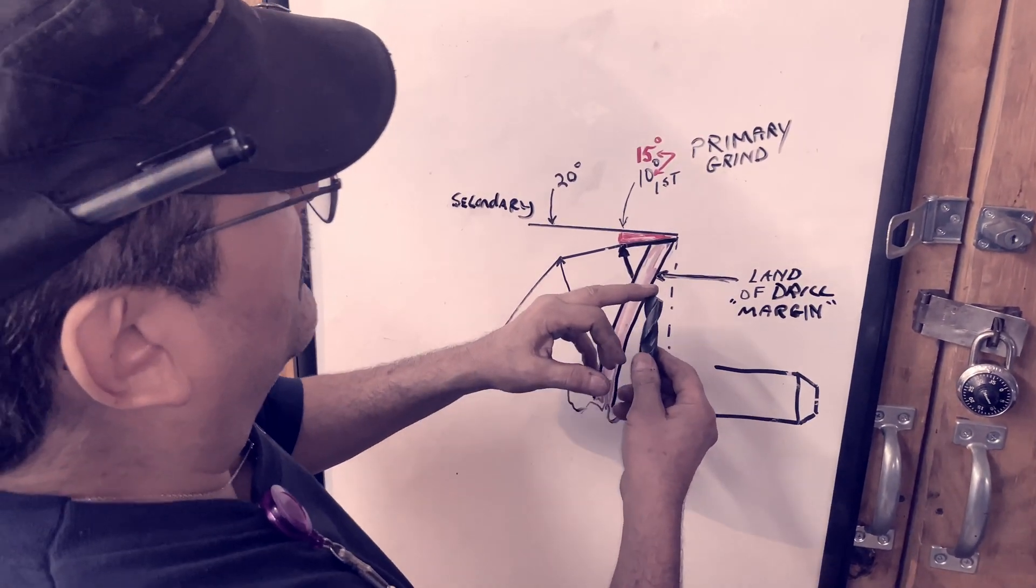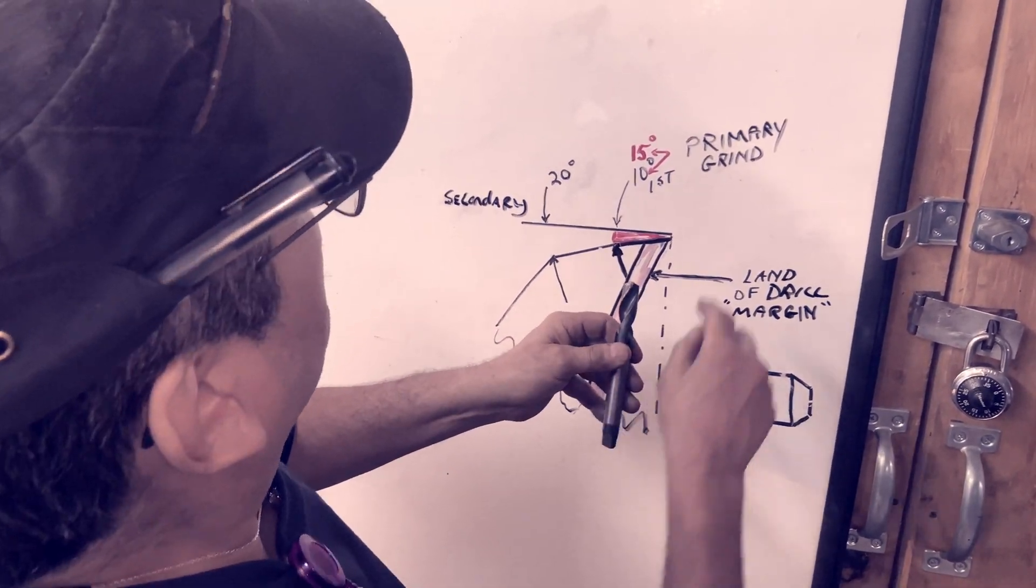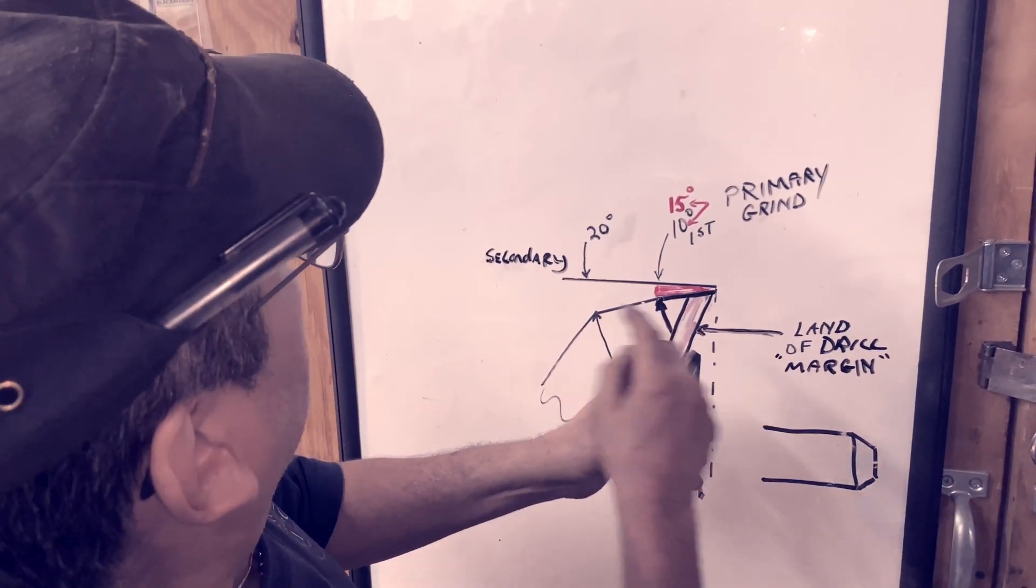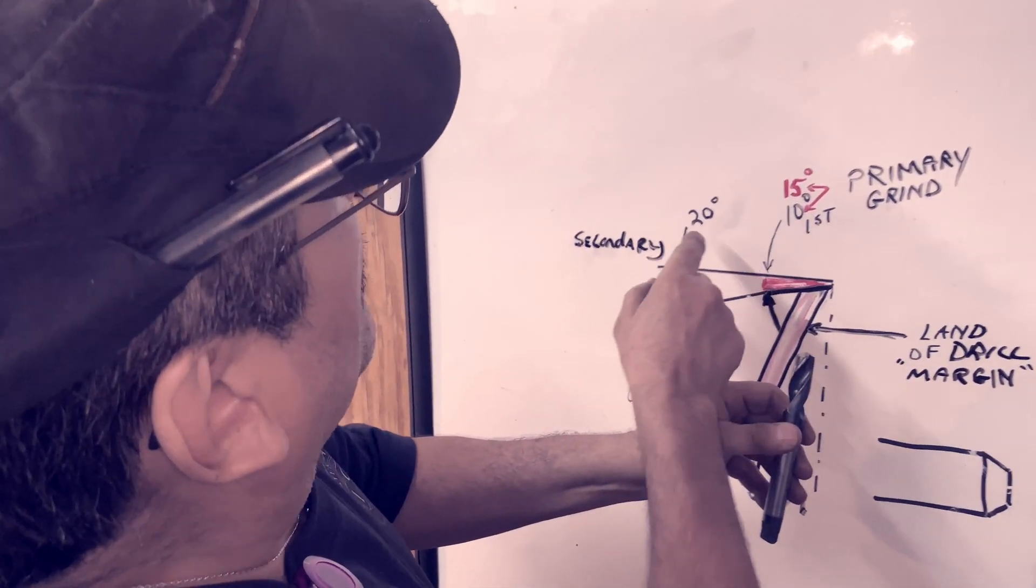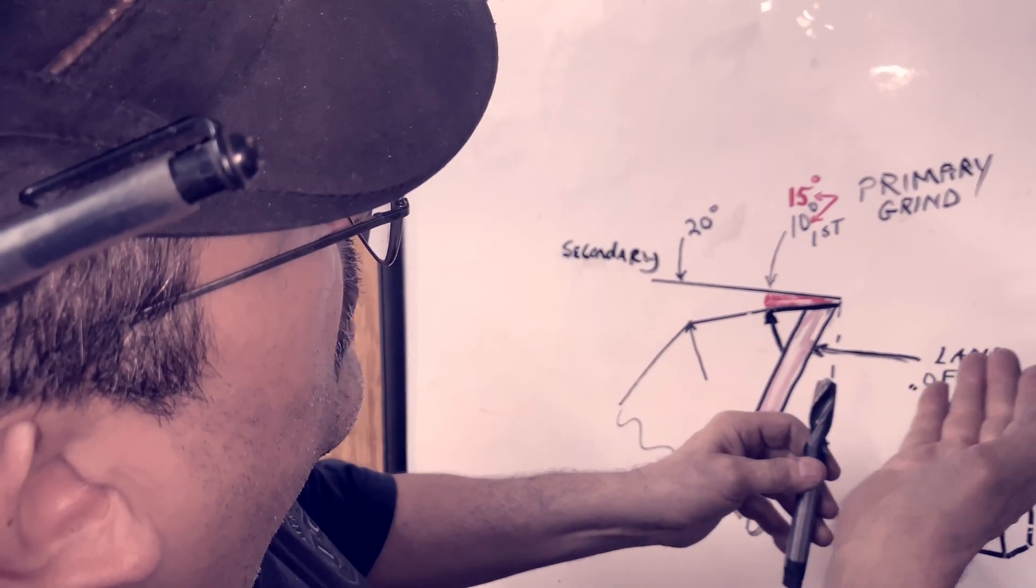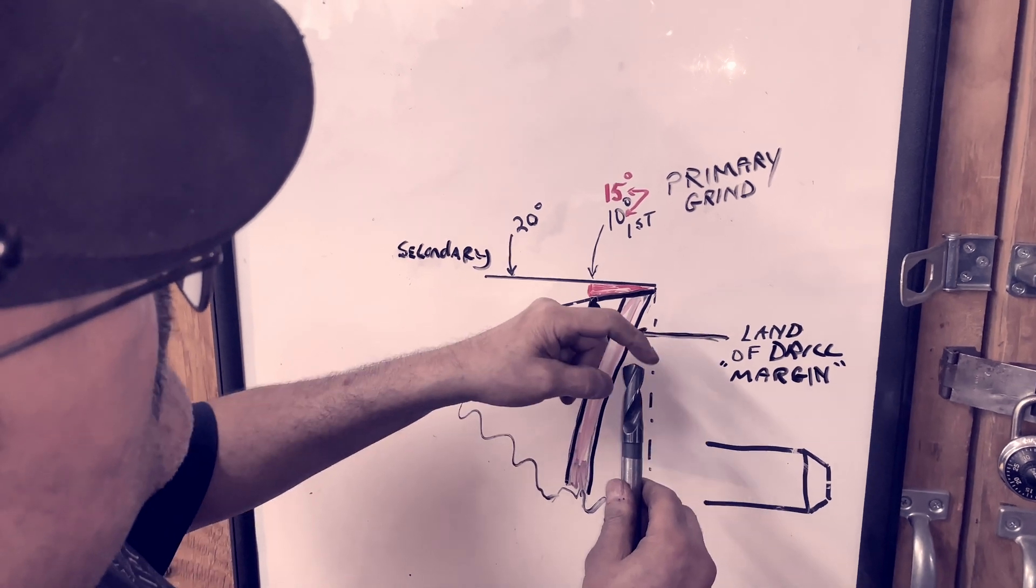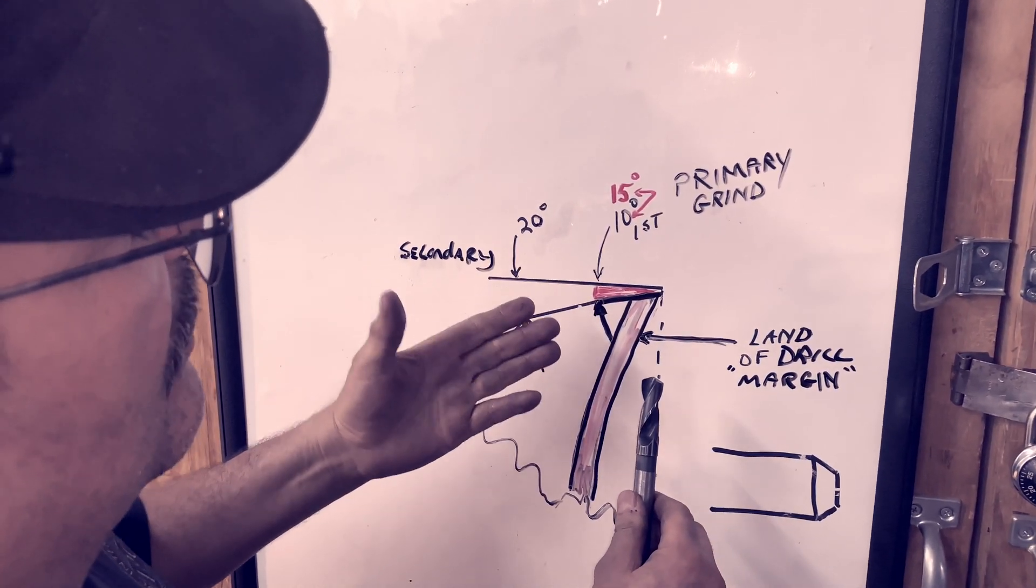We're going to grind a drill, and we're going to grind a primary grind, 15 to 20 degrees clearance, with a secondary 20 degrees clearance. So we're going to gradually get more and more angles. And we're going to grind 59 and 59, which is 118 included.